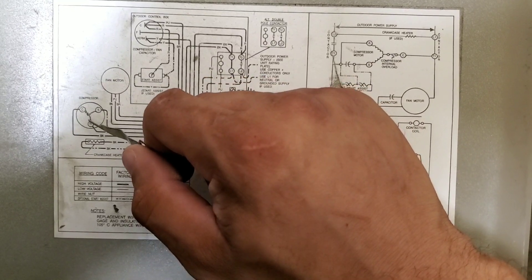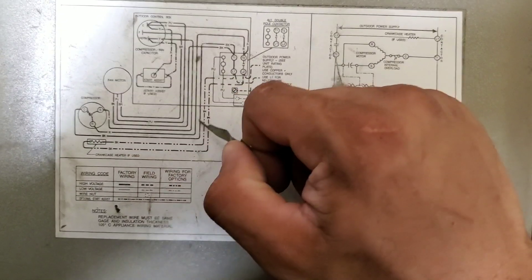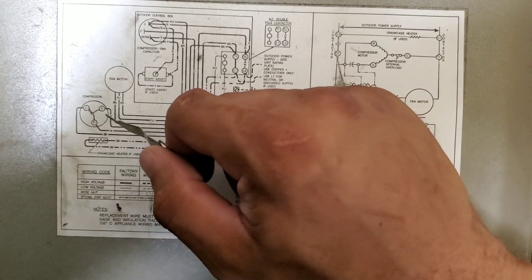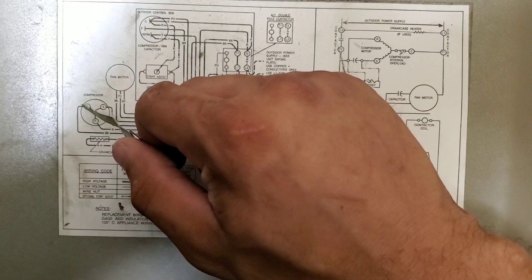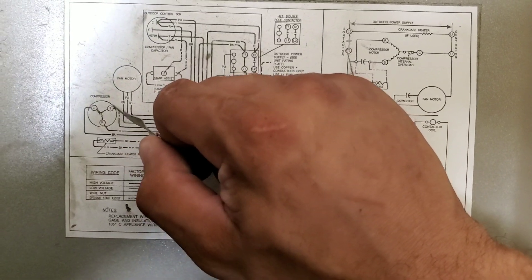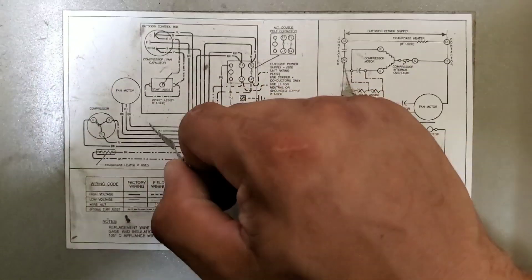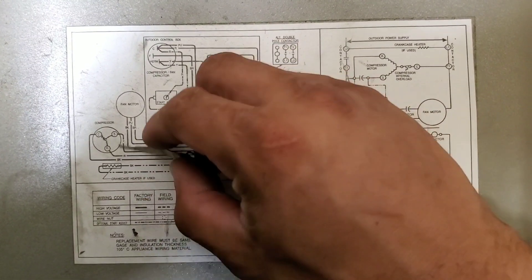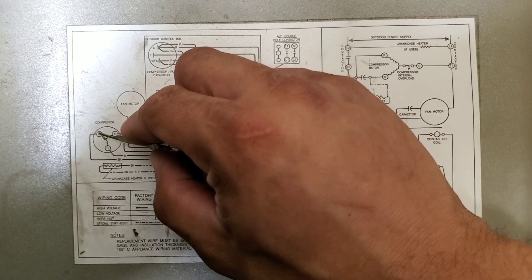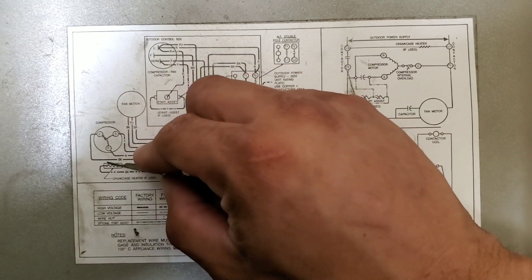What happens oftentimes, especially guys who are new to the industry, is they'll have a new compressor and they'll basically just cut the wires and try to tie them with wire nuts based off colors and not off what the schematic reads.